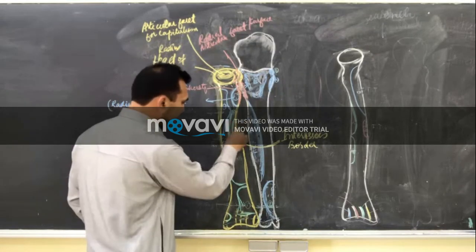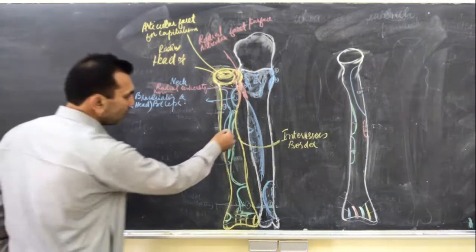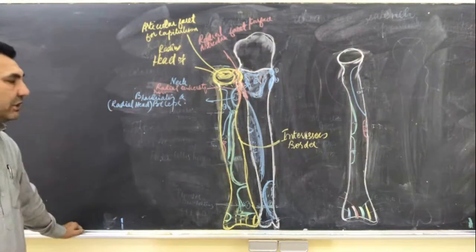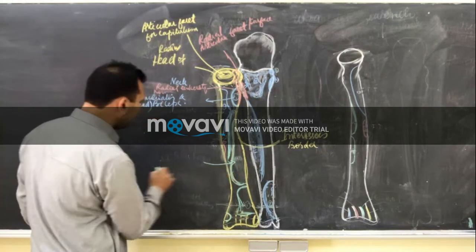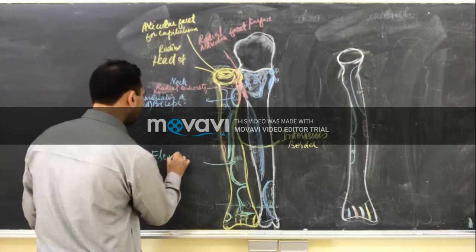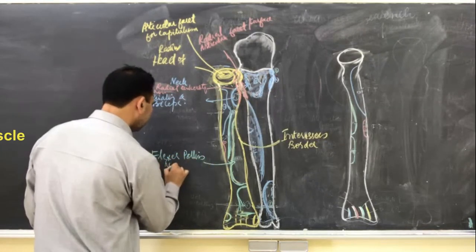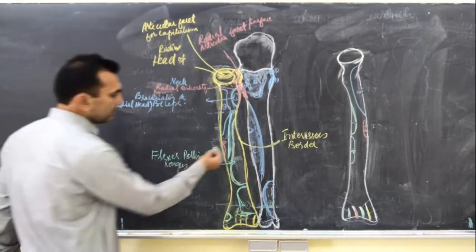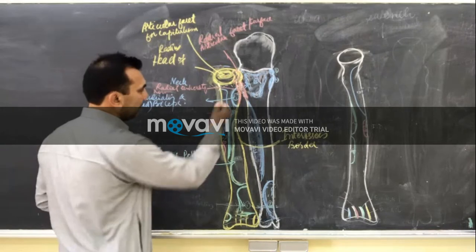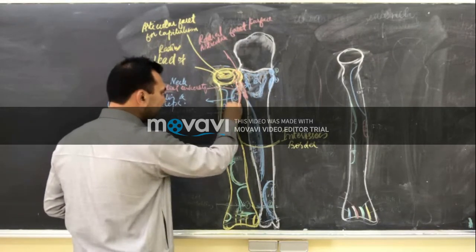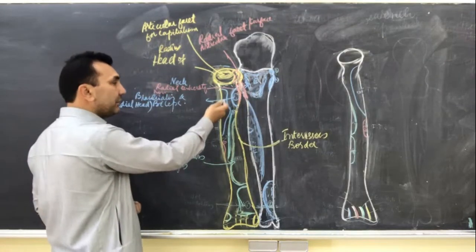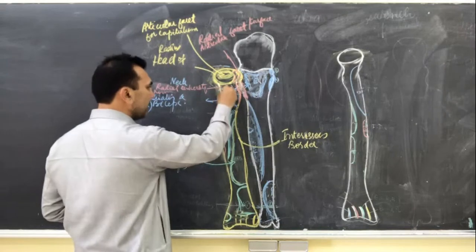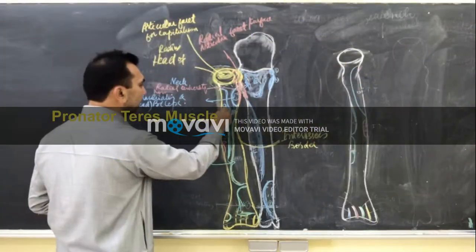On the anterior surface of the radius bone, the major portion of the anterior surface is responsible for the attachment of the flexor pollicis longus muscle. Just opposite the radial tuberosity, on the anterior and lateral surface, the upper one-third portion is for the attachment of the pronator teres muscle.